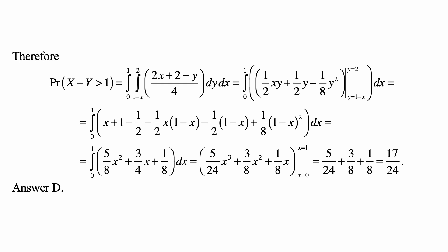Well, we have 1/2 times x times 2, so that's x, plus 1/2 times 2, which is 1, minus 1/8 times 2 squared, so that's negative 1/2.